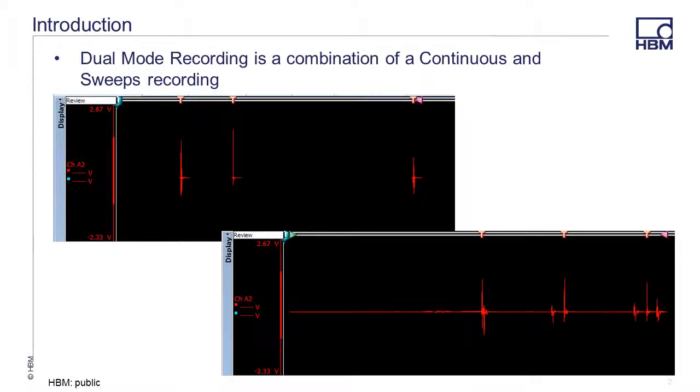A dual-mode recording is a combination of a continuous recording and a sweeps recording. It is typically used by a test operator that is mainly interested in sweeps data but is nervous about not having any recorded data between sweeps. Dual-mode allows you to record data between the sweeps at a lower sample rate.